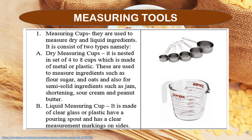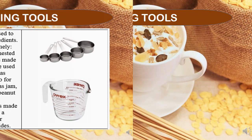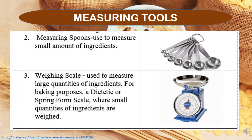The liquid measuring cup is made of clear glass or plastic, has a pouring spout, and has clear measuring markings on the sides. Measuring spoons are used to measure a small amount of ingredients. The weighing scale is used to measure large quantities of ingredients for baking purposes. A dietetic or spring-form scale is used where small quantities of ingredients are weighed.